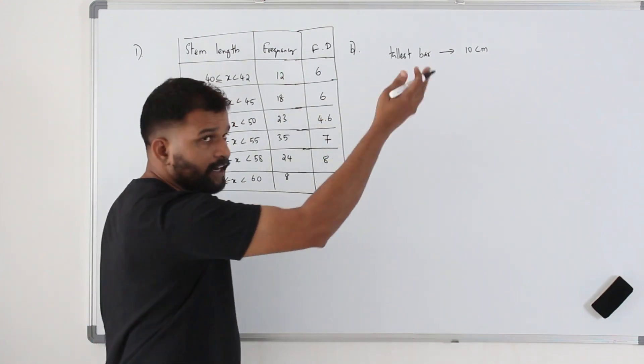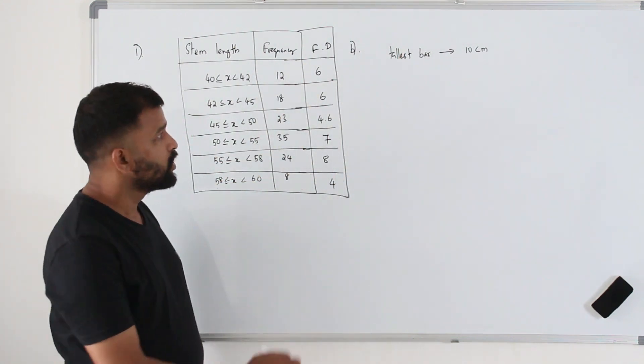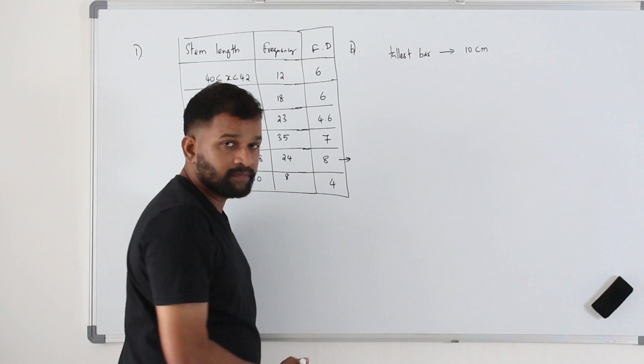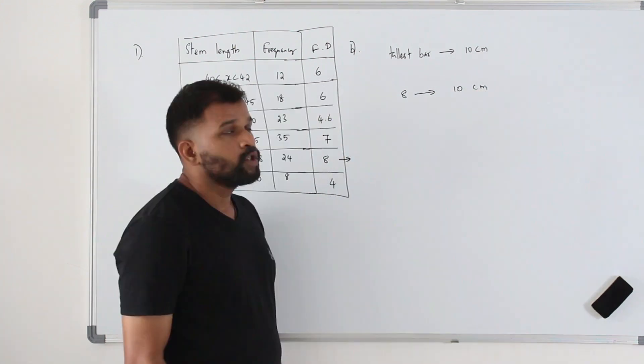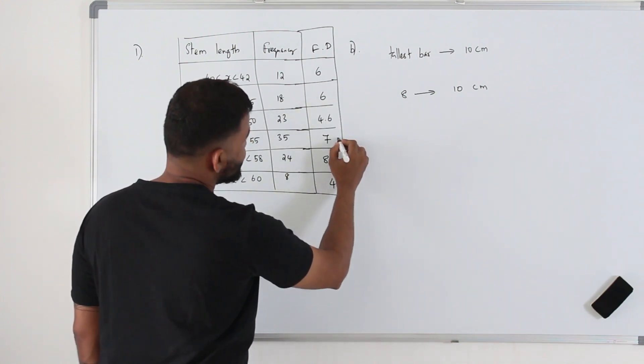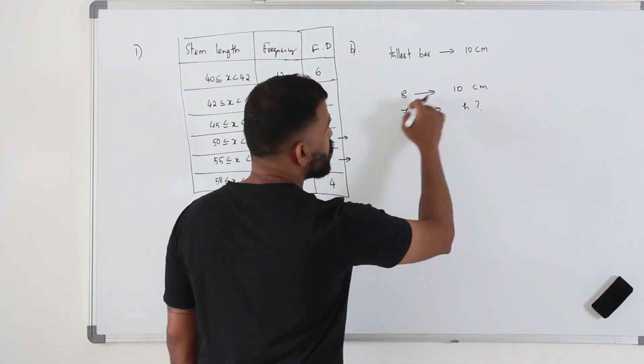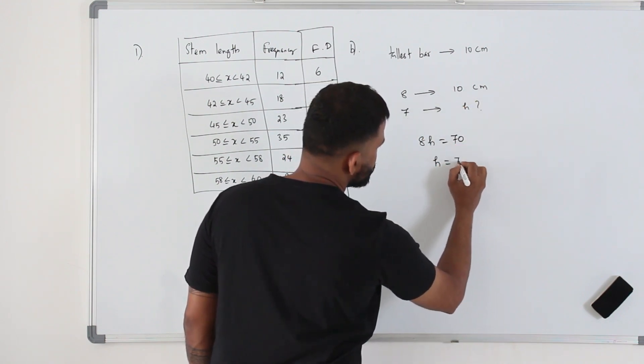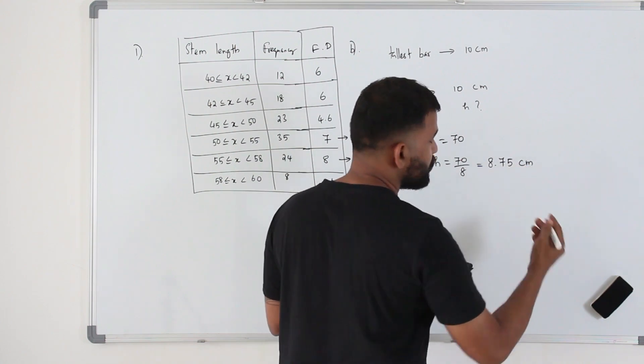This would be the height of the bar, but they are not using the same measurement. They have used some scale factor. So the height of the tallest bar is supposed to be 8, but they have used 10 centimeters. So what would be the height of the second tallest bar? Which one is the second highest number here? 7. So what would be the corresponding height H? We don't know the scale factor. So cross multiply and find H. 8H equals 70. H is 70 divided by 8. So the height of the second tallest bar would be 8.75 centimeters.